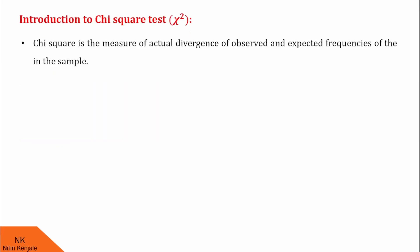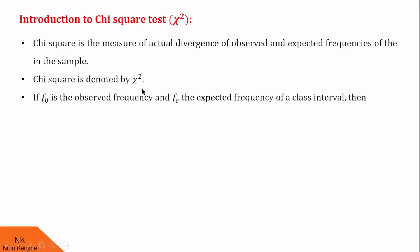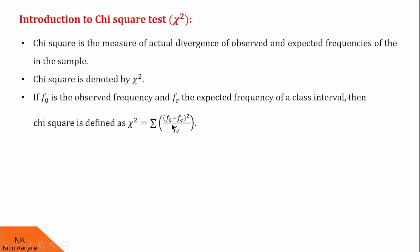Chi-square is the measure of actual divergence of observed and expected frequencies in the sample. Chi-square is denoted by this notation, we read this as chi-square. If Fo is the observed frequency and Fe is the expected frequency of the class interval, then chi-square is defined as chi-square is equal to summation of (Fo minus Fe) the whole square upon Fe.